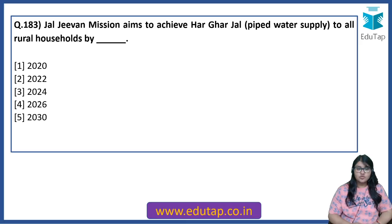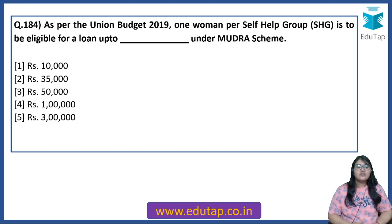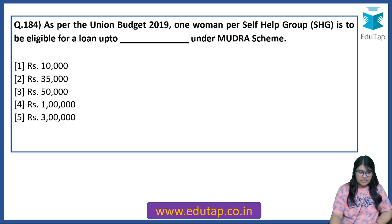Jal Jeevan Mission aims to achieve Har Ghar Jal — piped water supply to all rural households — by which year? Whenever there is an initiative, we need to be aware of the target year. The answer is 2024. As per the Union Budget 2019, one woman per self-help group is to be eligible for a loan up to 1 lakh rupees under the Mudra scheme.